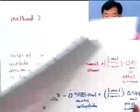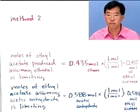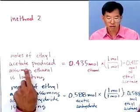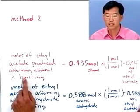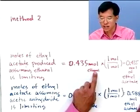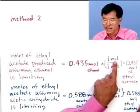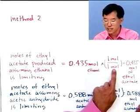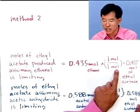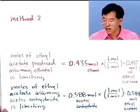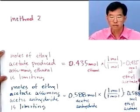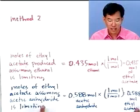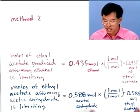Now let's use method two — you could use method one, but I'm going to show you a bonus you get from method two. If we calculate how many moles of ethyl acetate we would have produced assuming ethanol is the limiting reagent: 0.435 moles of ethanol times 1 mole of ethyl acetate per mole of ethanol gives us 0.435 moles of ethyl acetate. That's assuming ethanol was the limiting reagent. Now we do the second part of method two: calculate how much ethyl acetate we could make assuming acetic anhydride is the limiting reagent.